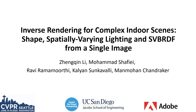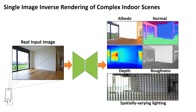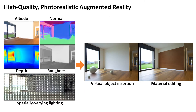I am Zheng Qingli from UC San Diego. I will present our work on inverse rendering of complex indoor scenes. We present a physically motivated deep network to reconstruct shape, complex materials, and spatially varying lighting from a single image of an indoor scene, which enables high-quality AR applications such as object insertion and material editing.